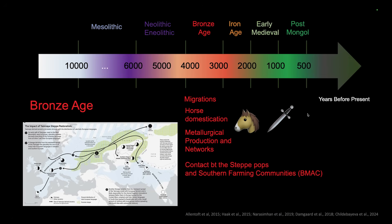Also during this time we see connections between farming communities around the Black Sea and more western steppe populations. Moving closer in time to the Bronze Age, we see other events in the Central Asian steppes and in Southern Central Asia. It's a time of migration — for instance, the migration of the Yamnaya group that spread across Western and Eastern Eurasia. Horse domestication is confirmed during the Bronze Age, along with the development of metallurgical networks and interactions between steppe populations and the Bactria-Margiana archaeological complex.